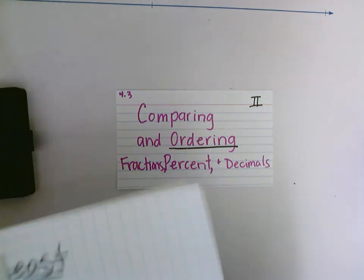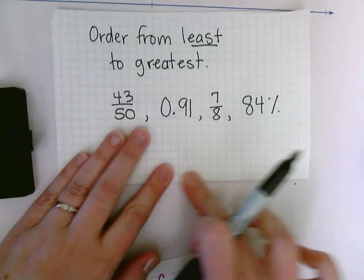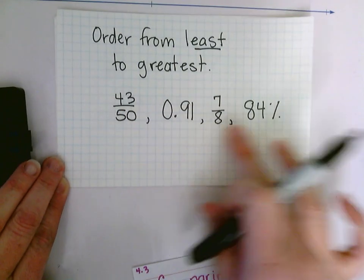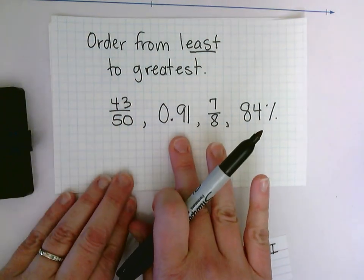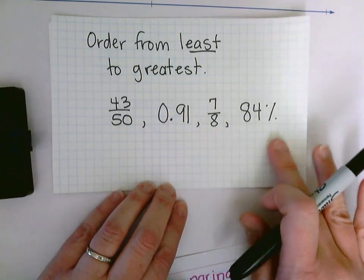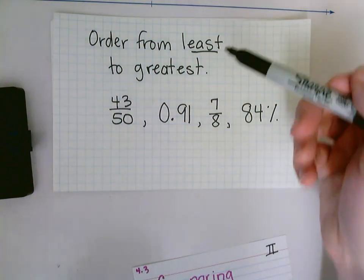So let's look at this first example. Here I have four values: I have 43/50, 91/100, 7/8, and 84%. I want to order them from least to greatest.